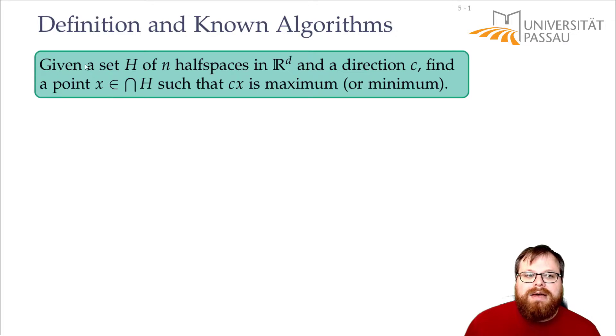Here we again have a set of half planes if you're in the plane or half spaces if you're in R to the d and that gives us a convex set. But now we also have a direction c and we want to find the point in this intersection such that c times that point is maximum or minimum depending on if we have a maximization or minimization problem. So instead of finding the convex hull we want to find the point on the convex hull that maximizes or minimizes some vector.